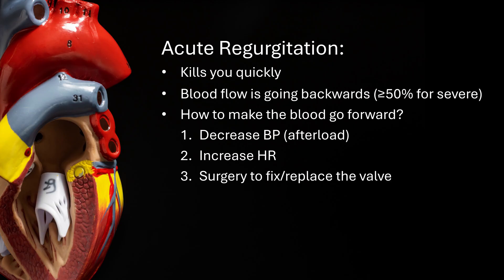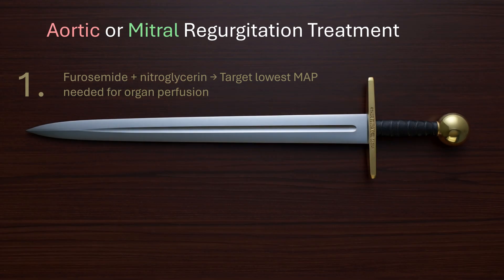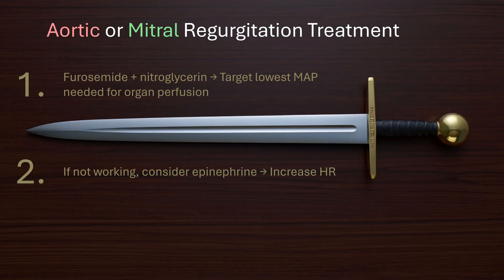I think of acute severe regurgitation similar to a necrotizing soft tissue infection — the patient needs surgery, but we can do a few interventions in the ED to help them make it to the operating room. For all valvular emergencies with pulmonary edema, everyone gets diuretics. The treatment for acute severe aortic or mitral regurgitation will be furosemide plus nitroglycerin to target the lowest mean arterial pressure possible for organ perfusion. The heart benefits from low blood pressure via afterload reduction but suffers from too low blood pressure since you compromise coronary blood flow — keep it low, but not too low. If that's not working, consider epinephrine to increase the heart rate, and consult cardiac surgery to replace the valve.